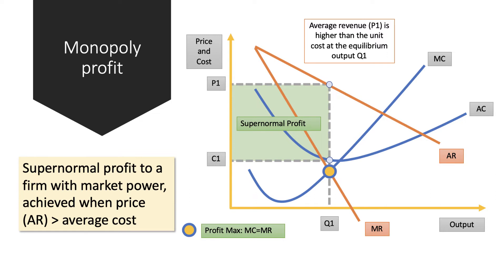M also stands for monopoly profit. A monopoly would normally be expected to make a super normal profit because the price they're charging at equilibrium output Q1 is much higher than the unit cost C1. You could develop this diagram to make the demand and marginal revenue curves more inelastic, which would create an increased gap between price and cost and higher profits. So M — monopoly profit.